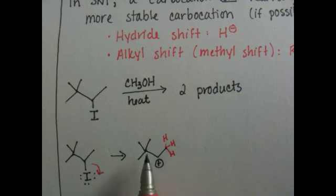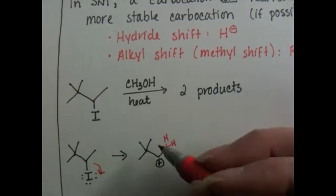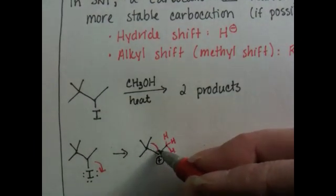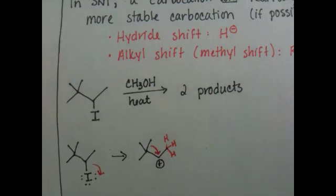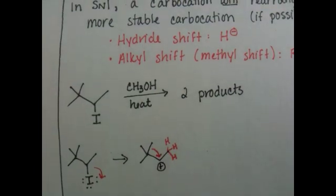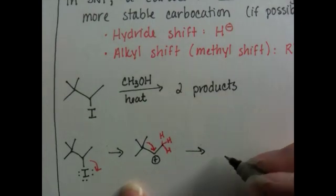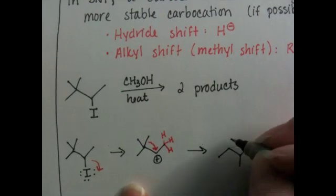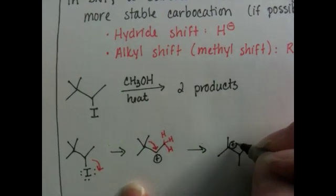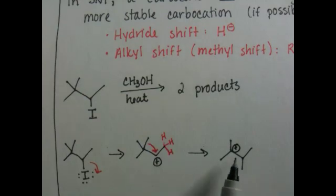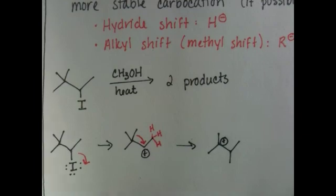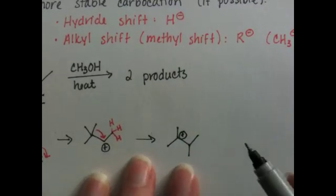But we can move one of these methyl groups. We just take this whole entire methyl group and shift it over onto that carbon. And when we shift that methyl group over, we end up with that carbocation. That is a tertiary carbocation. That carbocation is way more stable than the secondary.